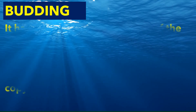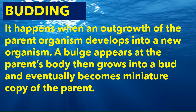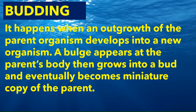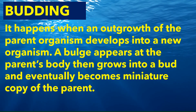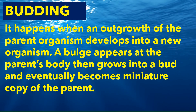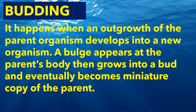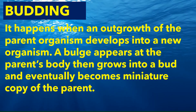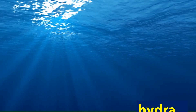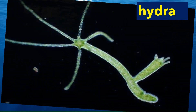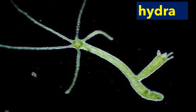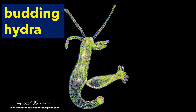Another method of asexual reproduction is budding. Budding happens when an outgrowth of a parent organism develops into a new organism. A bulb appears at a parent's body, then grows into a bud and eventually becomes a miniature copy of the parent. An example of an animal which undergoes budding is hydra.